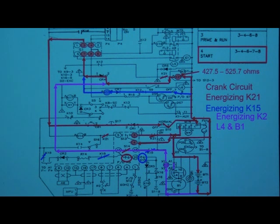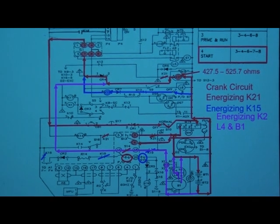The last step we need to do in the crank circuit is to energize the L4 starter solenoid and the B1 starter motor. Our L4 goes through the K2 crank relay contact towards the positive side of the battery. Once there internally, it closes its contacts which allows the B1 starter motor to energize. At this point, our generator is now cranking.